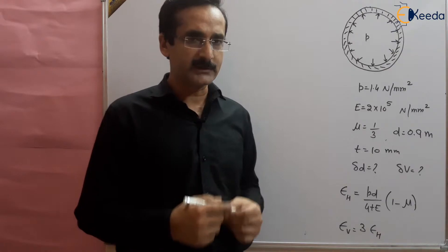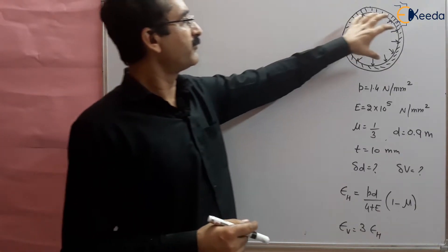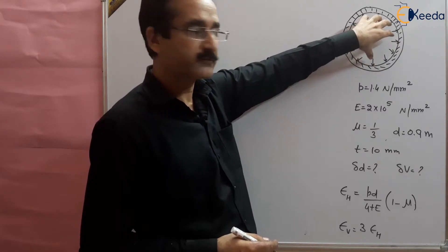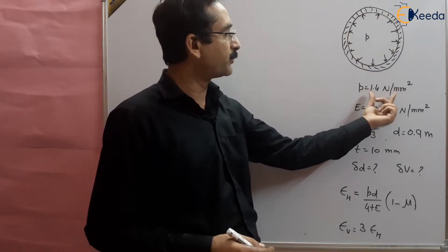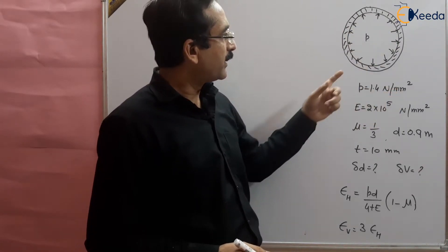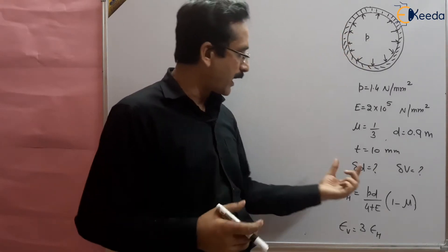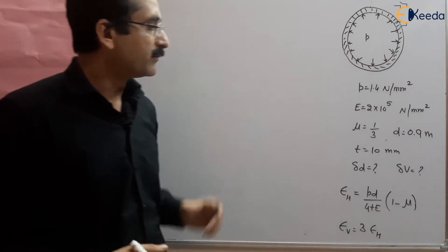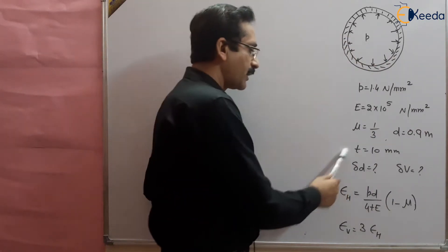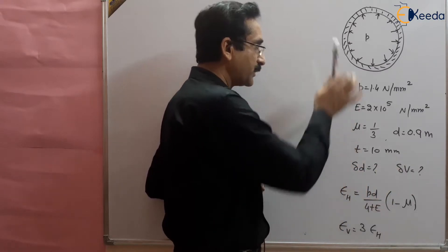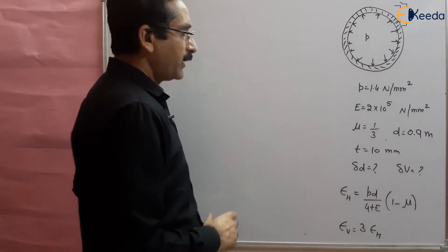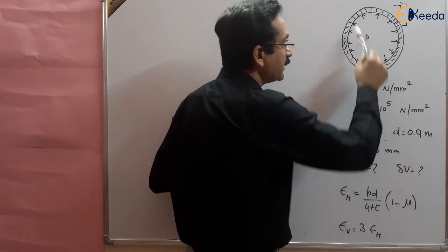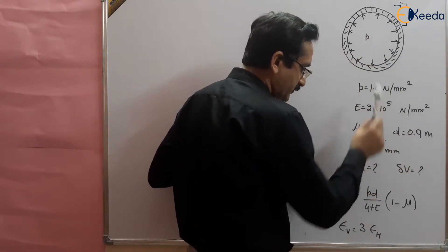This is a question of thin spherical shell in which we are given the pressure applied internally in a spherical shell, that is 1.4 megapascal. Due to this pressure, there is increase in diameter and increase in volume of this shell. We have to find out the change in diameter and change in volume, and we are given the modulus of elasticity, Poisson's ratio, internal diameter, and thickness of the material.